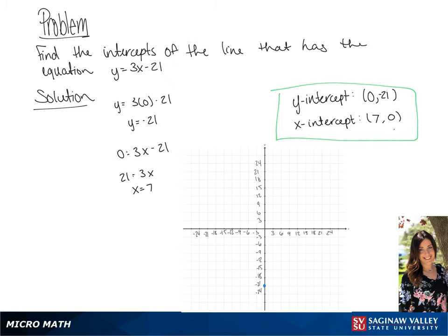Now we're going to graph using the intercepts. So first we're going to graph (0, -21), and now (7, 0). And we can graph this line.